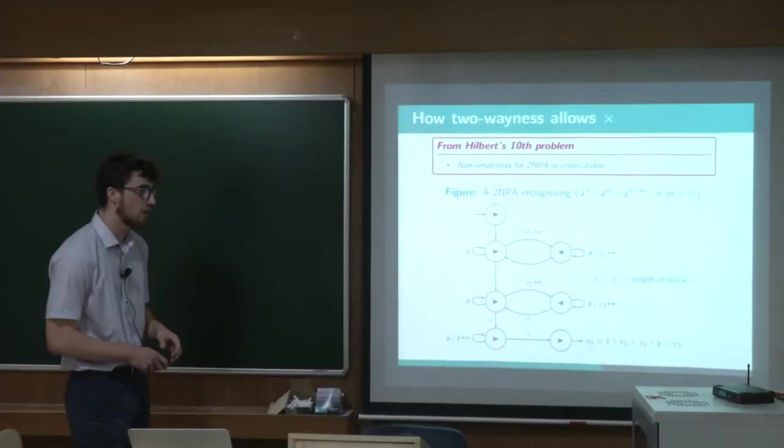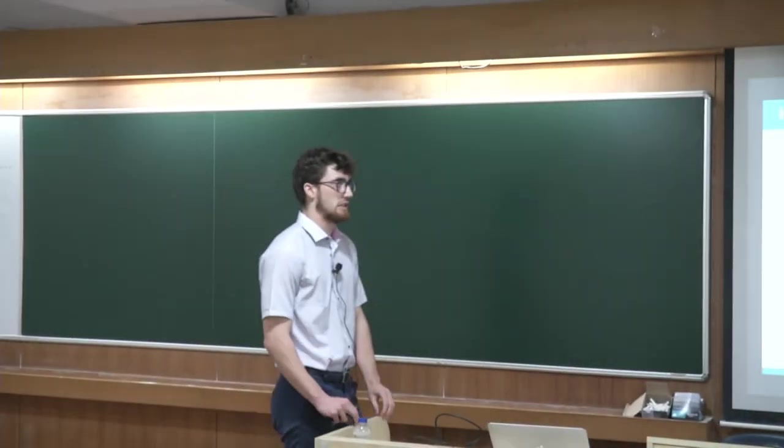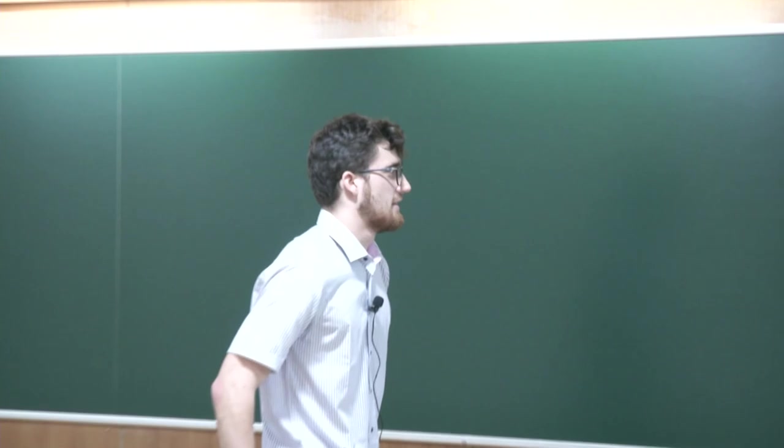So, just to come back to the undecidable result, or two-way non-deterministic Parikh automata, if you limit the number of variables, that's the order formula, and is it possible to come back to some decidable result? Yes. I mean, for instance, in your example, three variables? Five.